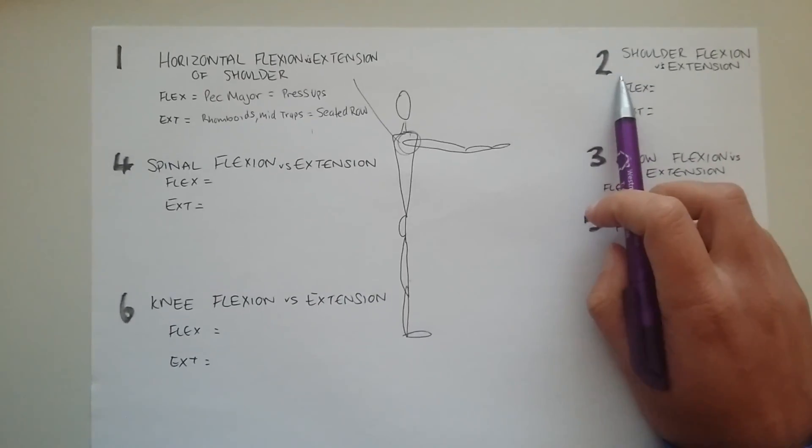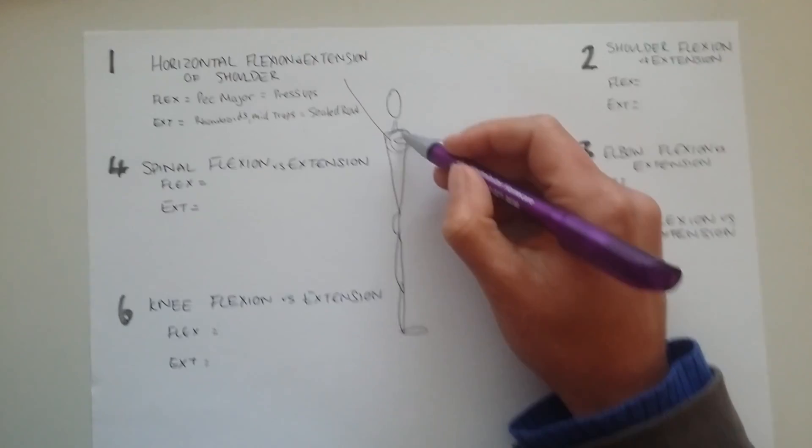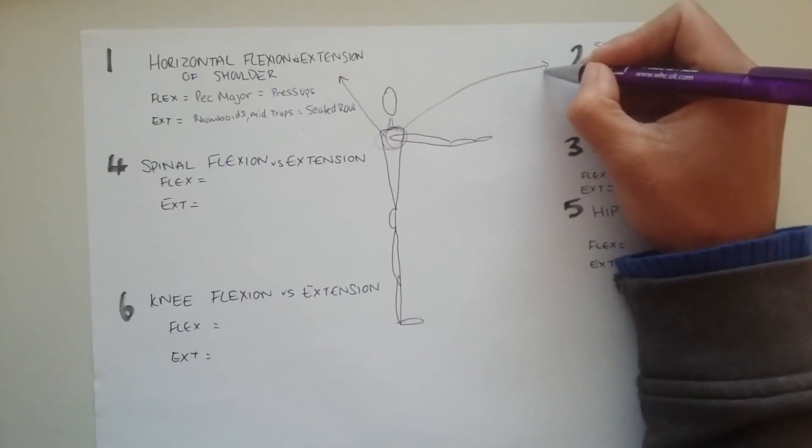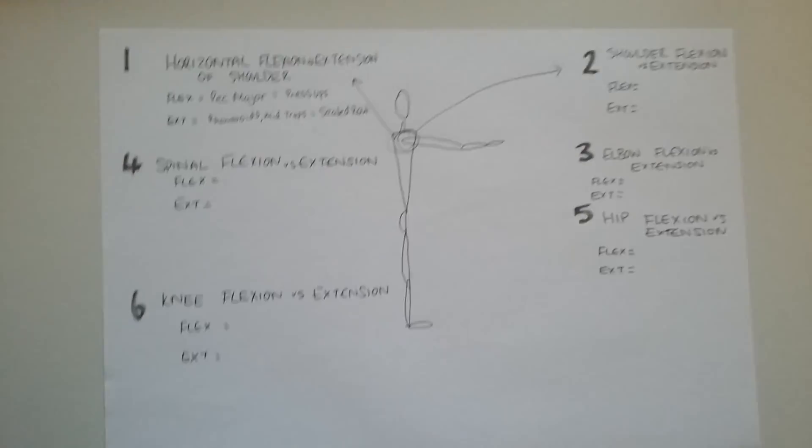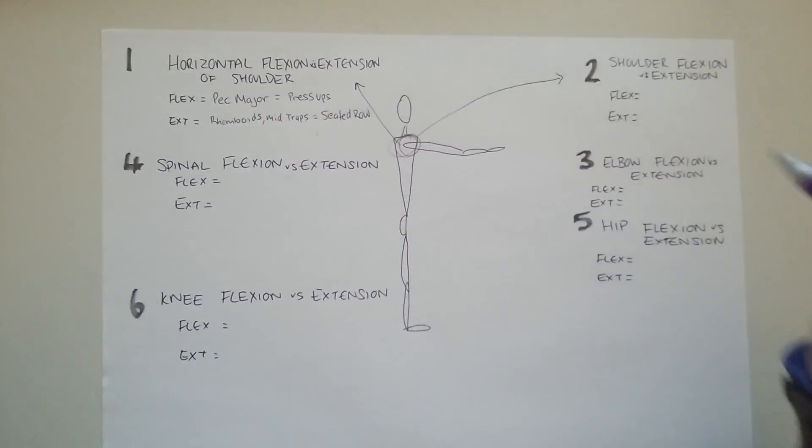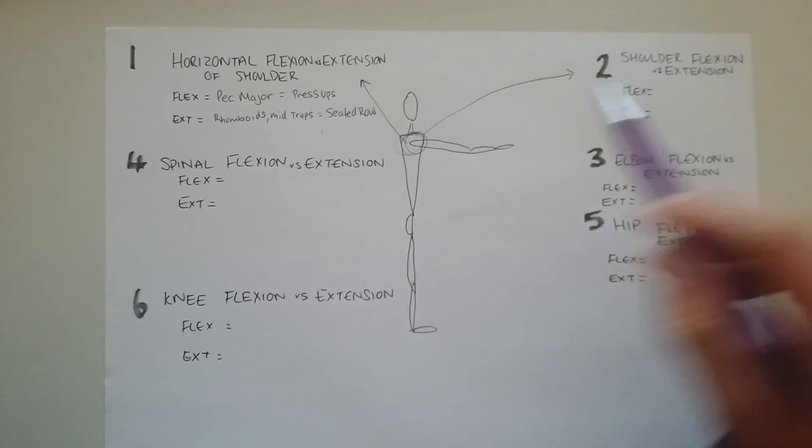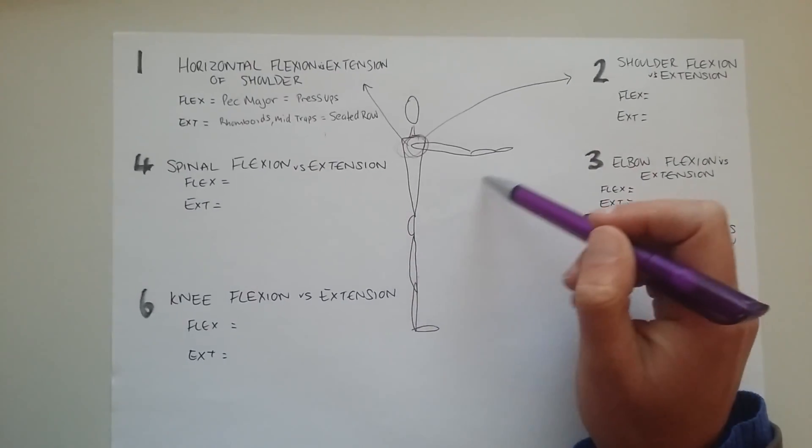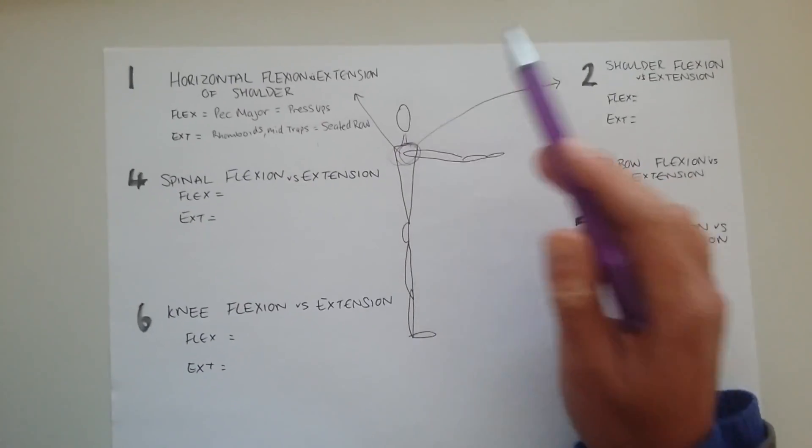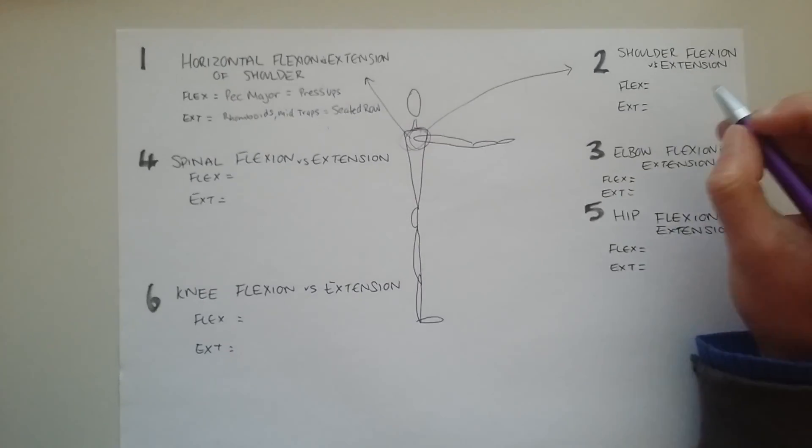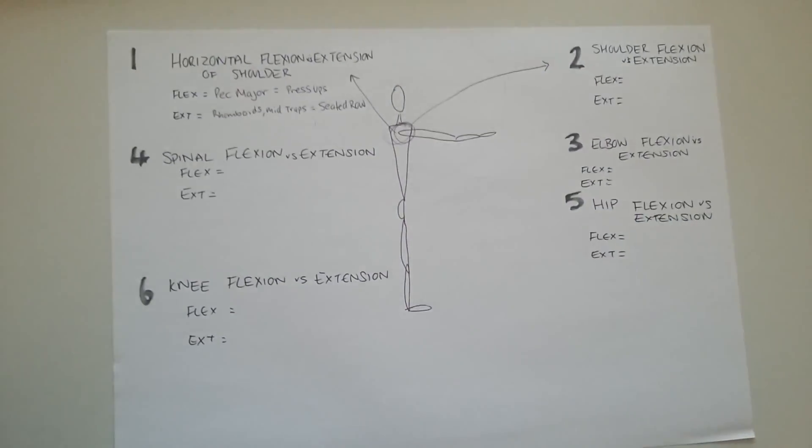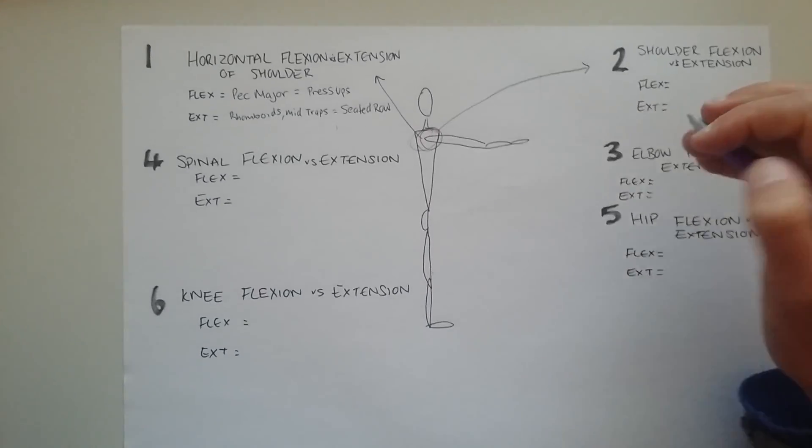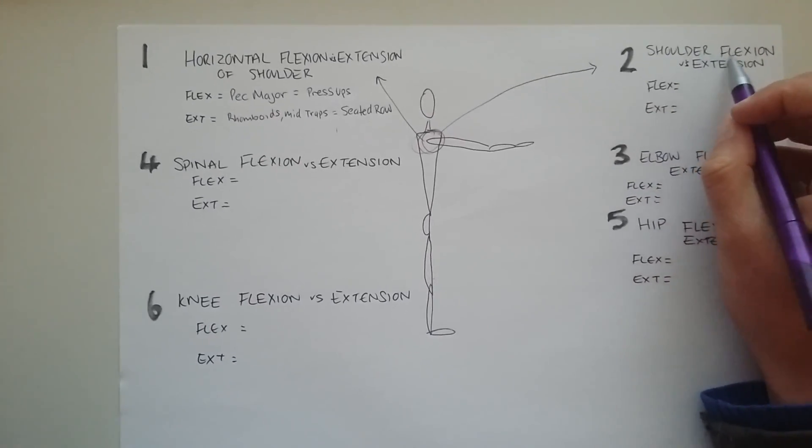Now let's go over to number two over here. Still works around the shoulder but this time instead of it being going horizontally, so opening and closing of the arms, we're going to go up and down of the arms. So this is where you're starting out maybe by your hands right by your side but you're going to lift the arm all the way up towards over the head. Now that is shoulder flexion. So shoulder flexion is lifting your arm up in front all the way up to over your head and that happens at the shoulder joint.